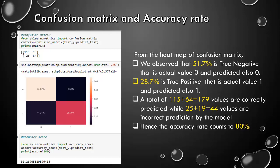The confusion matrix and the accuracy rate. Confusion matrix is an n by n matrix, where n represents the number of classes in the target variable. Now, let's interpret it. From the heat map of confusion matrix, we observed that 51.7% is true negative, i.e. actual value 0 and predicted also 0. 28.7% is true positive, i.e. actual value 1 and predicted value also 1. A total of 179 values are correctly predicted, while 44 values are incorrectly predicted. Hence, the accuracy rate counts to around 80%.